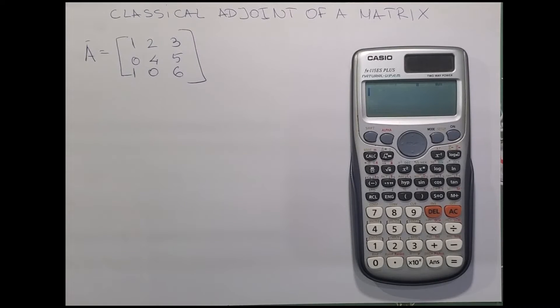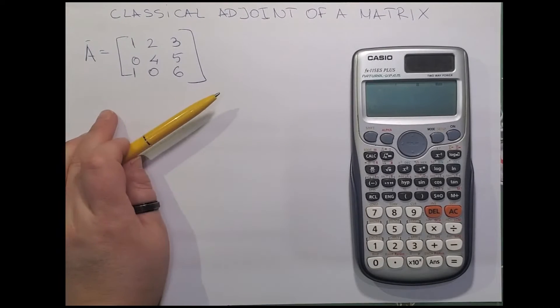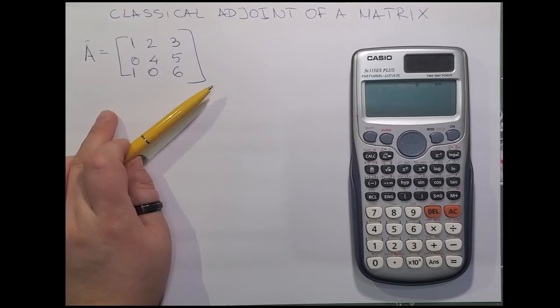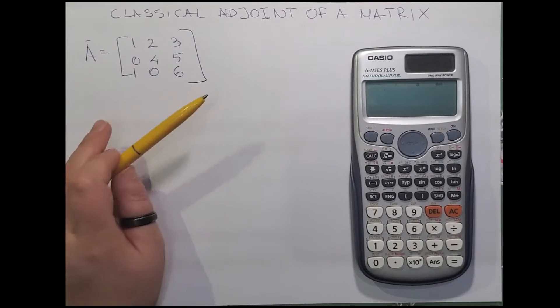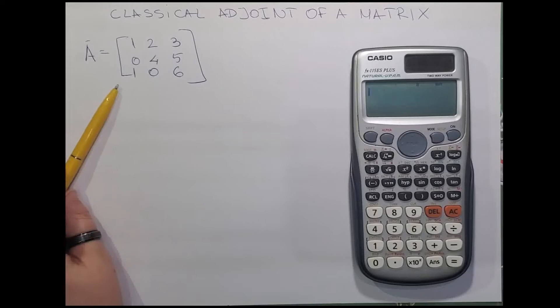we will explore an efficient alternative by demonstrating how to calculate the classical adjoint of a matrix, but now by using the Casio FX115ES calculator. I will use the same example as in my other video. So here it is. Find the classical adjoint of the following matrix.